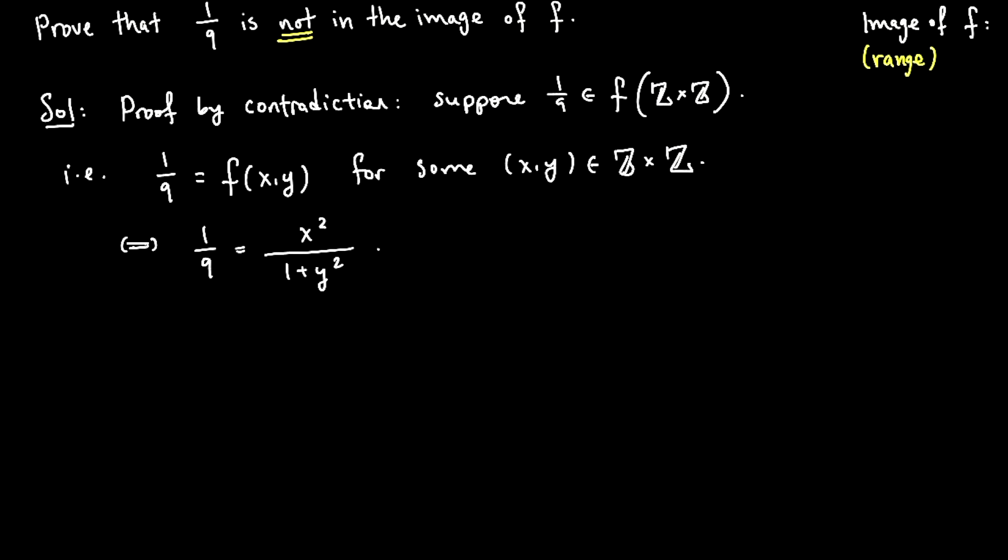And if I clear the denominators here or just cross multiply, this looks like 1 plus y squared equals 9x squared. And all I know is that x and y are integers in this equation.